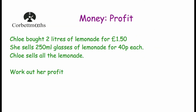Let's have a look at our last question. Chloe bought 2 litres of lemonade for £1.50 — that's how much money she spends. And she sells 250 millilitre glasses of lemonade for 40p each. Chloe sells all of the lemonade — work out her profit. What we need to do is work out how many glasses of lemonade Chloe sells.